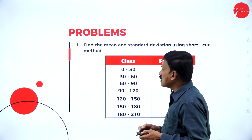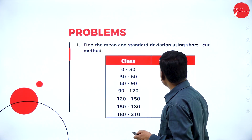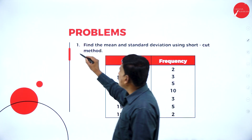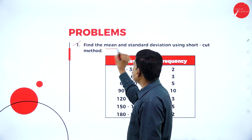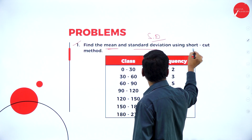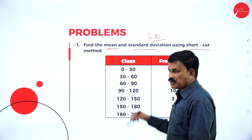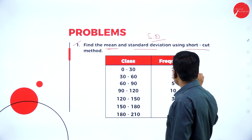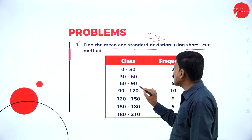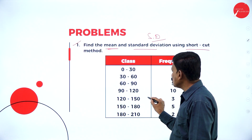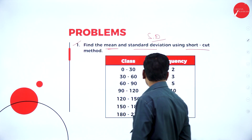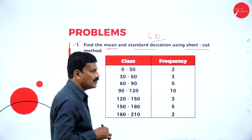Now move to a simple example: find the mean and the standard deviation using the shortcut method. Given class interval and frequency. Class intervals: 0–30, 30–60, 60–90, 90–120, 120–150, 150–180, 180–210. Frequency fi: 2, 3, 5, 10, 3, 5, and 2.